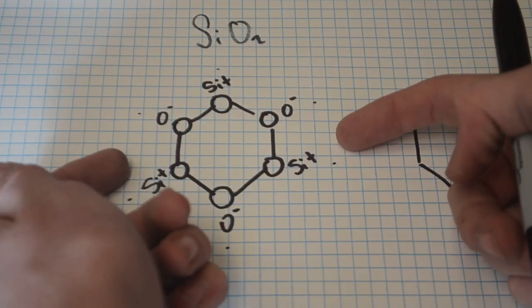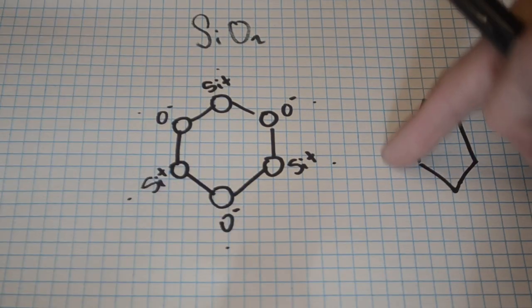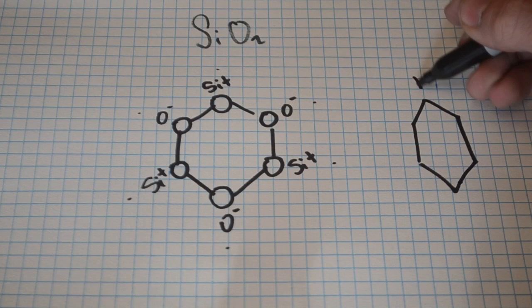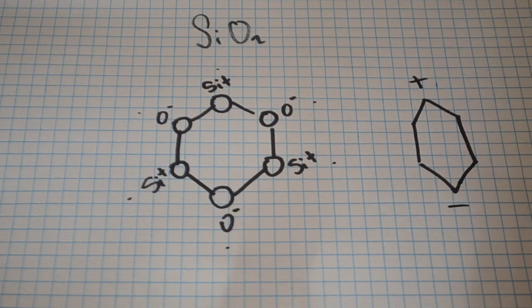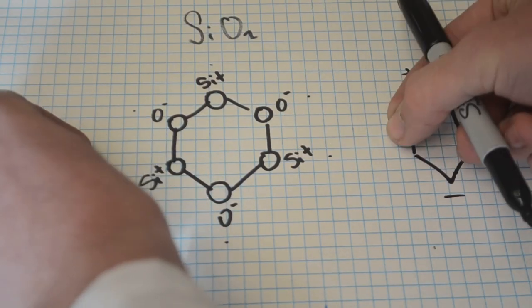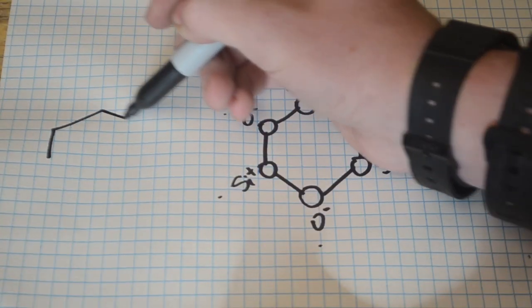Now keeping in mind these charges, if the crystal gets pushed in this way then the shape will more likely resemble this. And the top will have a net positive charge while the bottom will have a net negative charge. Now instead if I were to take this crystal and pull out on it like this it would generate more of this shape.